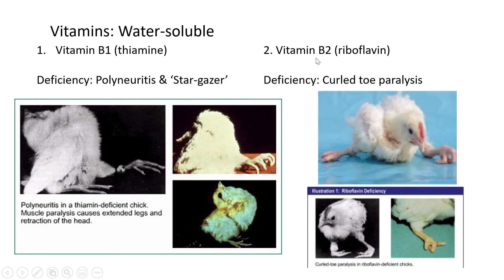Vitamin B2, also known as riboflavin, its deficiency causes curled toe paralysis. As the name says, literally the toes of the animals curl — it's also a nervous system deficiency issue. They can't move their legs, they can't walk anymore, they can't move their muscles. Both B1 and B2 are very prevalent, especially in chickens, though other animals can get it too.